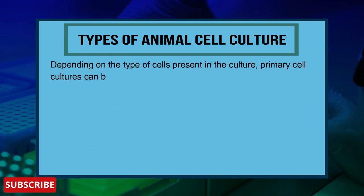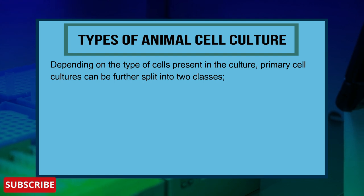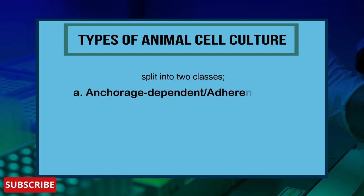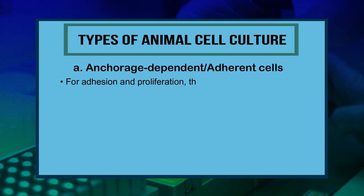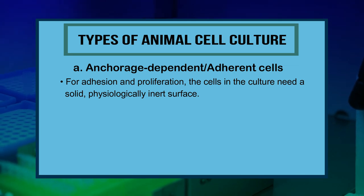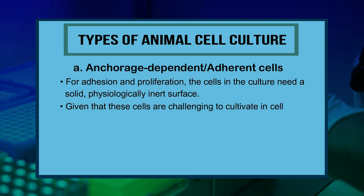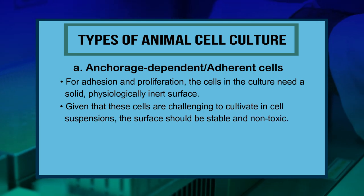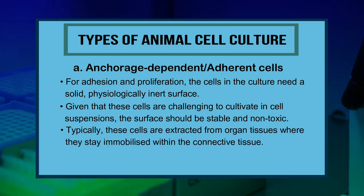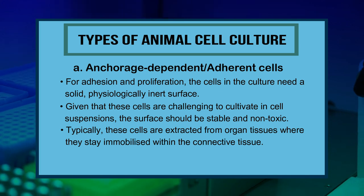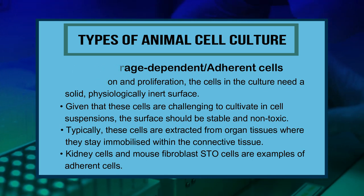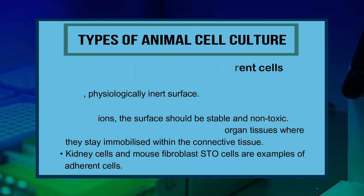Primary cell cultures can be further split into two classes. First, anchorage-dependent adherent cells: for adhesion and proliferation, cells need a solid, physiologically inert surface that is stable and non-toxic. These cells are typically extracted from organ tissues where they stay immobilized within the connective tissue. Kidney cells and mouse fibroblast STO cells are examples of adherent cells.